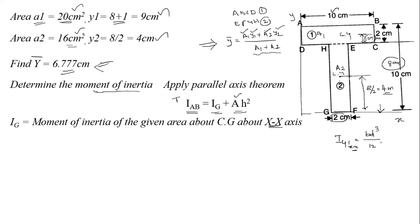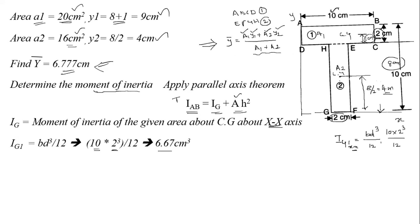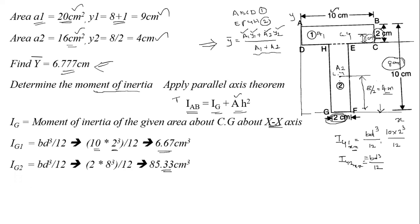For section 1: B = 10 cm, D = 2 cm, giving IG1 = 6.67 cm⁴. For section 2: B = 2 cm, D = 8 cm, giving IG2 = 2×8³/12 = 85.33 cm⁴.